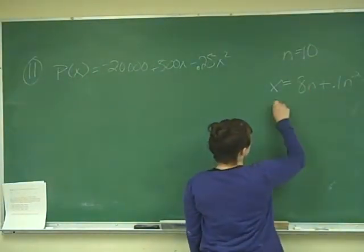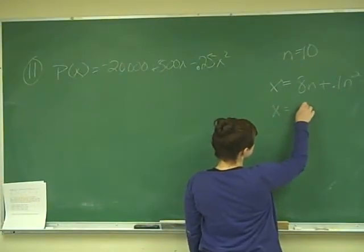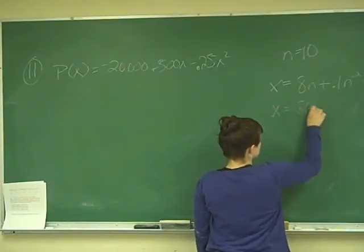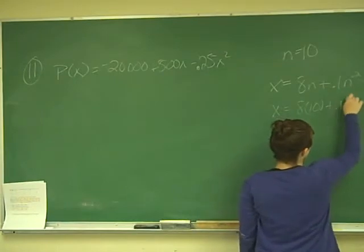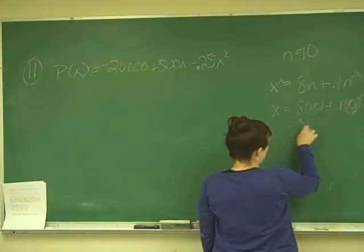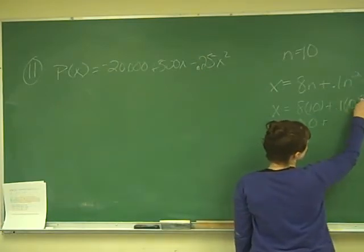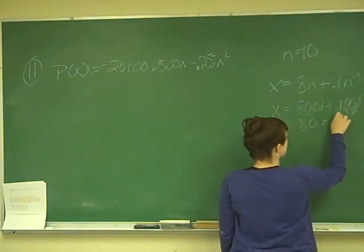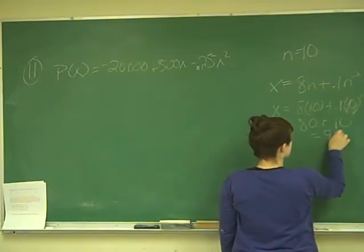So we just plug 10 into here and we get that x equals 8 times 10 plus 0.1 times 10 squared, which would be equal to 80 plus 10 squared is 100 times 0.1 would be 10. So x equals 90.